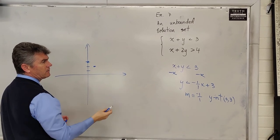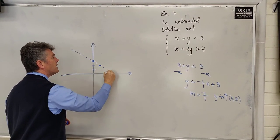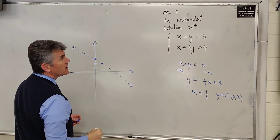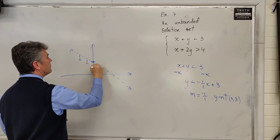Again, less than, so boundary line is dashed. No point on it satisfies the inequality. And we want less than 3, so we shade below.